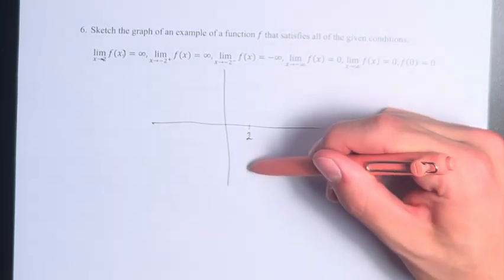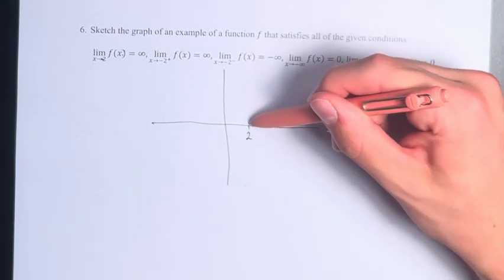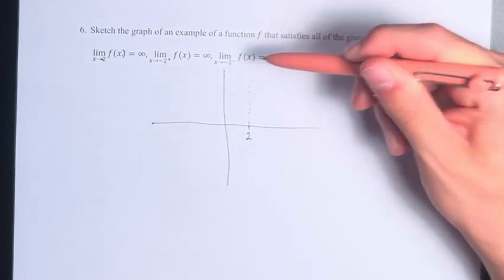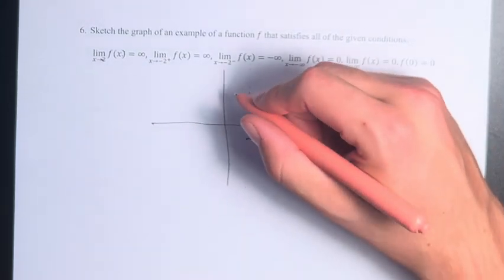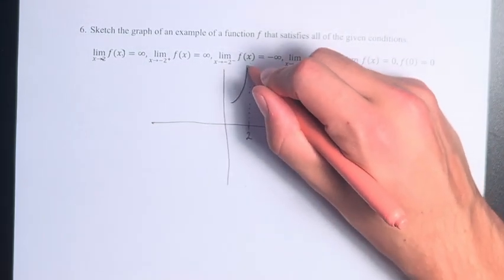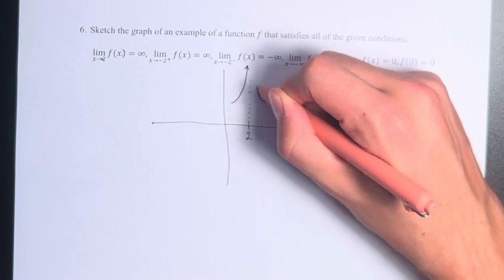what we can say is that we have a vertical asymptote, and as we get closer and closer to this value, we have asymptotic behavior. The function is going off to infinity as we get closer and closer from both sides.